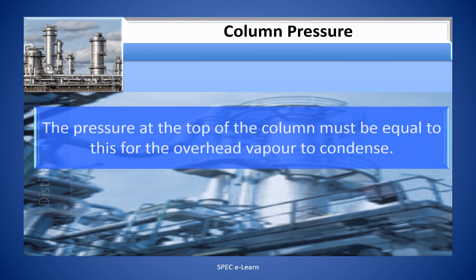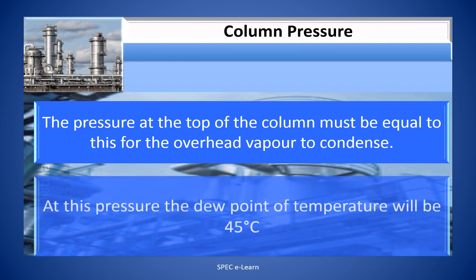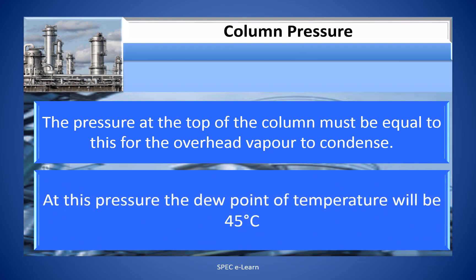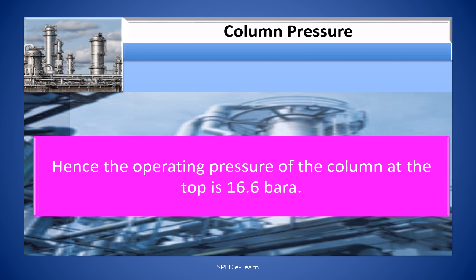The pressure at the top of the column must be equal to this for the overhead vapor to condense. At this pressure, the dew point temperature will be 45 degrees centigrade. Hence, the operating pressure of the column at the top is 16.6 bar absolute.